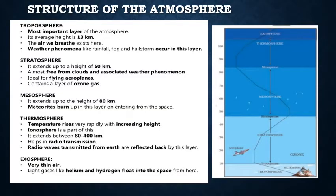Next, we are going to see the structure of the atmosphere. Our atmosphere is divided into 5 layers starting from the earth's surface. These are: troposphere, stratosphere, mesosphere, thermosphere, and exosphere.